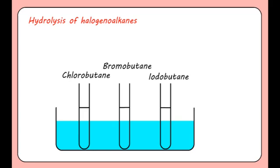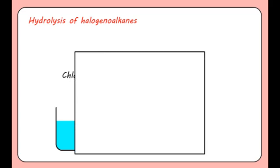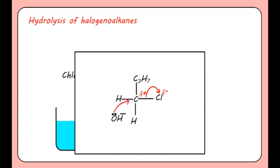The mechanism for all the haloalkanes is the same. The nucleophile, in this case a negatively charged hydroxide ion, attacks the electron-deficient carbon with a delta positive charge. The bond between the halogen and carbon then breaks by heterolytic fission to create a halide ion, and a bond is formed between the carbon and the hydroxide.